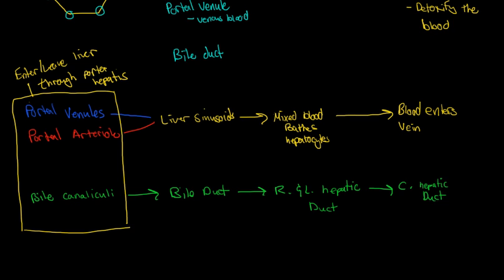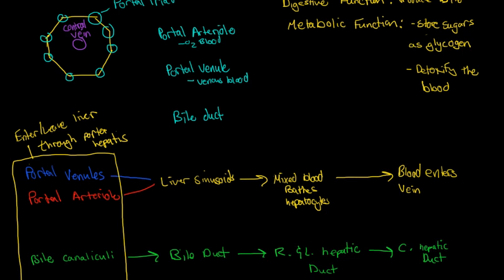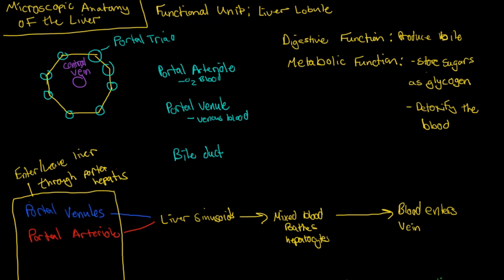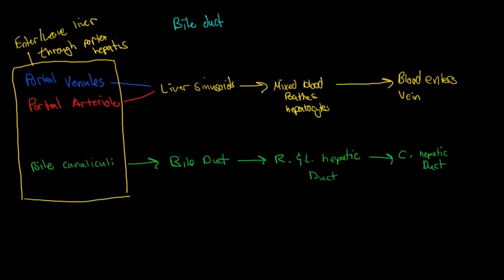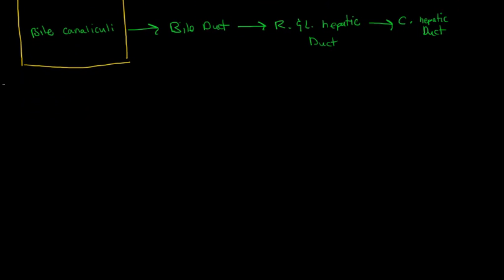We talked about how blood comes from the small intestine through these portal triad systems, through fenestrated capillaries, gets processed by the hepatocytes in the liver lobule, then enters the central vein and returns back into circulation. Now we're going to talk about the flow of bile.